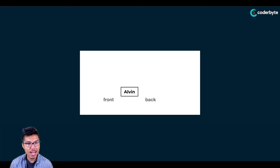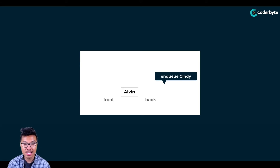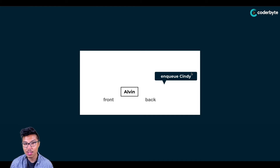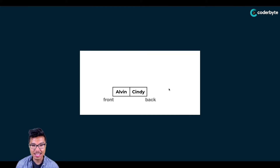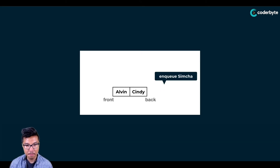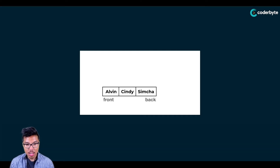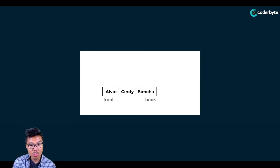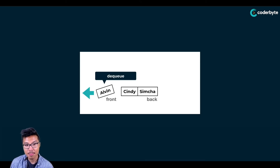Let's say I add another item — I'm enqueuing Cindy. Cindy enters through the back of the queue, which means Cindy comes after Alvin. So now Cindy is at the end and Alvin is at the front of my queue. Let's enqueue one more item: Simha. Simha would be added after Cindy. So here I have three items in my queue.